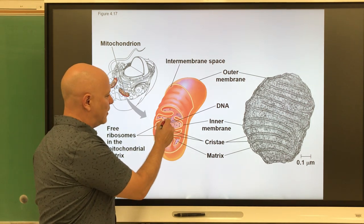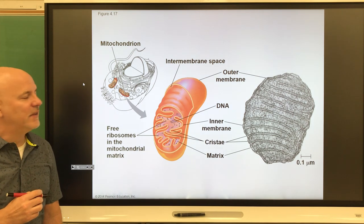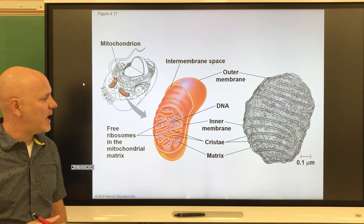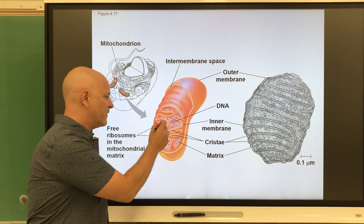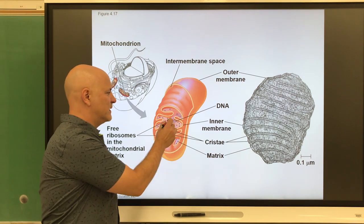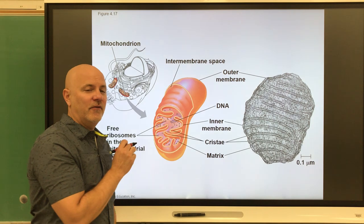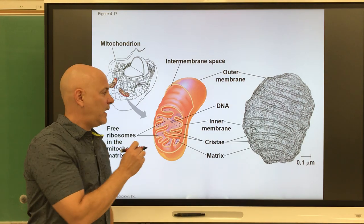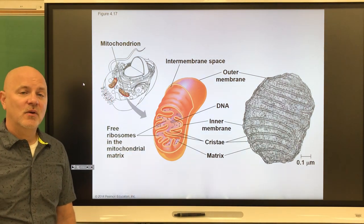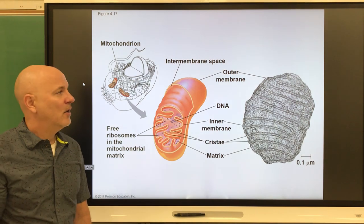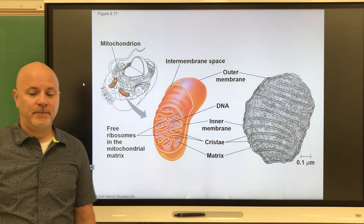Inside the inner membrane is the matrix, a jelly-like fluid similar to cytoplasm. Mitochondria also have their own DNA, their own RNA, their own ribosomes, and can make their own proteins — again, like little cells within a bigger cell.